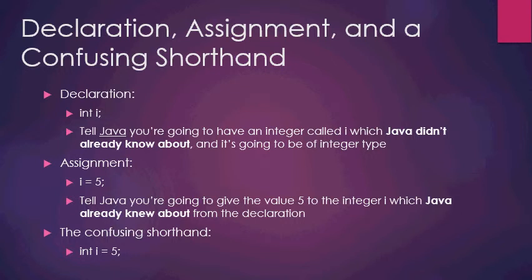Declaration, assignment, and a confusing shorthand. So, declaration — what's a declaration? 'int i;' is an example of a declaration. What you're doing there is you're telling Java you're going to have an integer called i, which Java didn't already know about, and it's going to be of integer type.